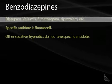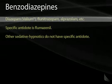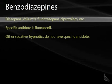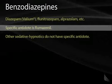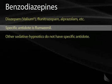Benzodiazepines are sedative hypnotics used for sleep aids and light sedation. The specific antidote for benzodiazepine poisoning is flumazenil. It works on the GABA-A receptor, blocking the benzodiazepine from binding as a GABA-A antagonist.